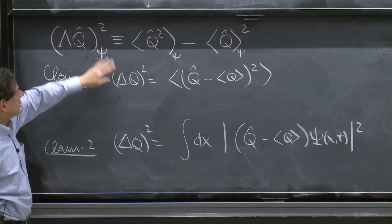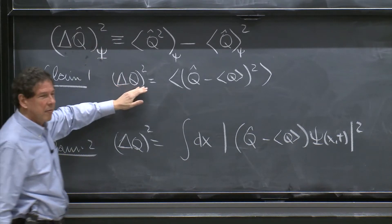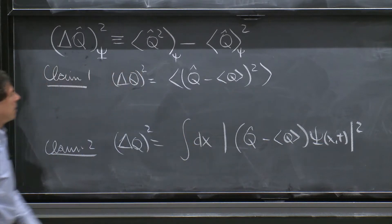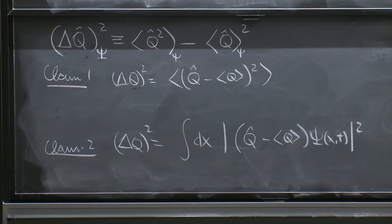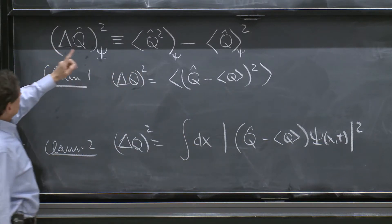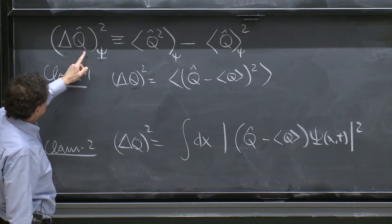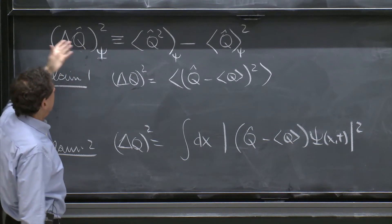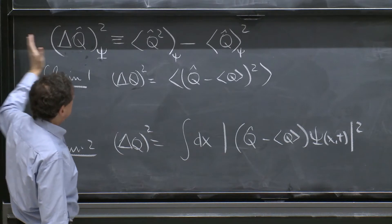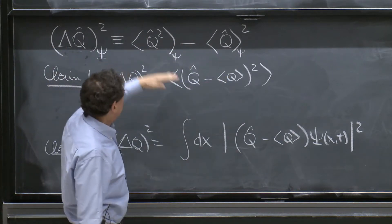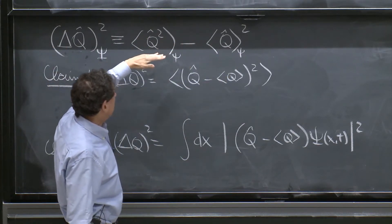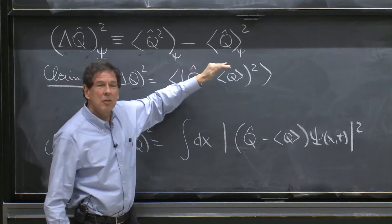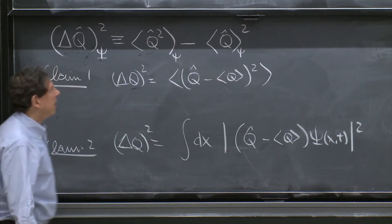Sometimes we write it, sometimes we get a little tired of writing it and we don't write it, but it's always implicit. So here it is. From the discussion of random variables, we're led to this definition, in which we would have the expectation value of the square of the operator minus the square of the expectation value.